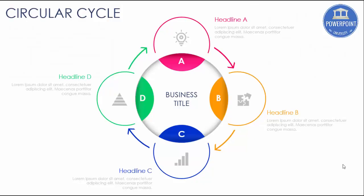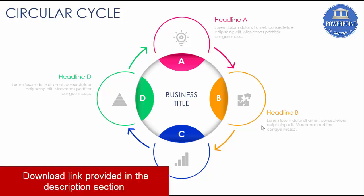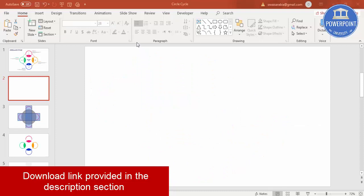Welcome to my YouTube channel PowerPoint University. In this tutorial, I'm going to show you how to create a four-step circular cycle infographic slide. You can see step A where I have added the icon of an idea, a headline, and detailed text. Then the arrow points towards option B, then C, then D, and the cycle continues.